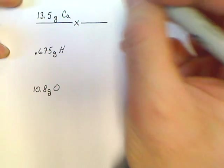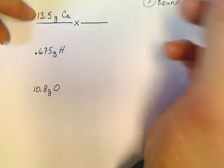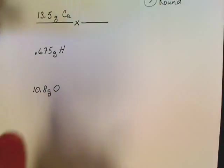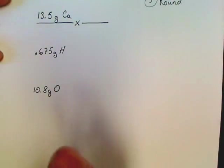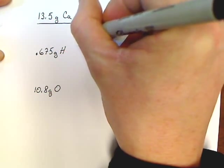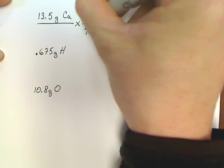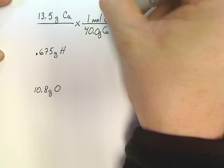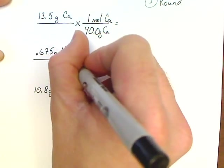These problems have only got three steps to them. Step number one, convert to moles. Step number two, divide by the smallest. And then step number three, round. So there's my three steps in working these problems.